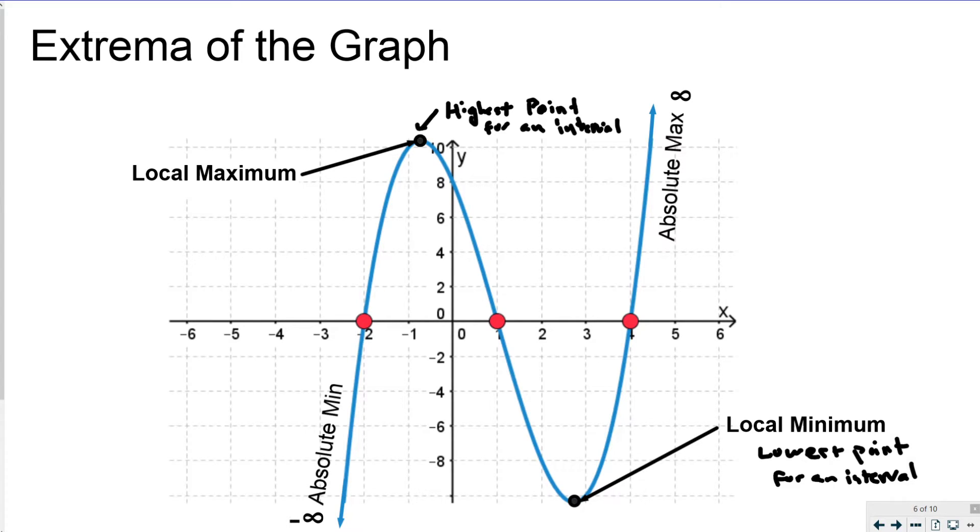Due to the specific shape of a cubic graph, we have a local maximum and a local minimum. And those local max and local minimums, we can find them on our calculator. We're going to be practicing in class how to adjust our viewing window to find these, as well as use the trace function to locate their exact location.